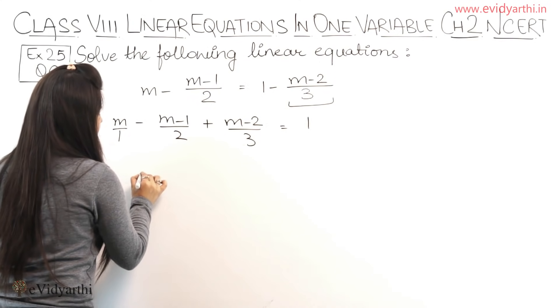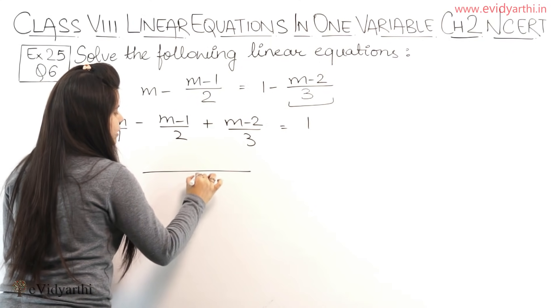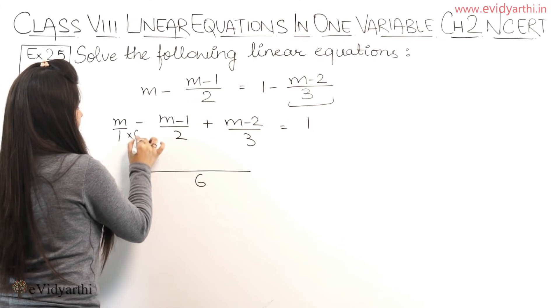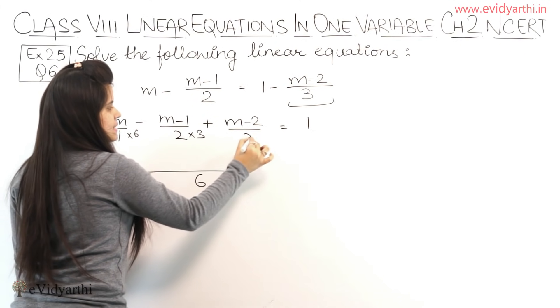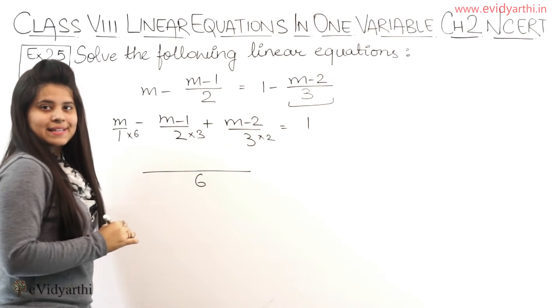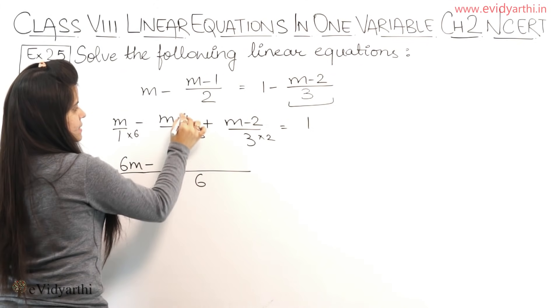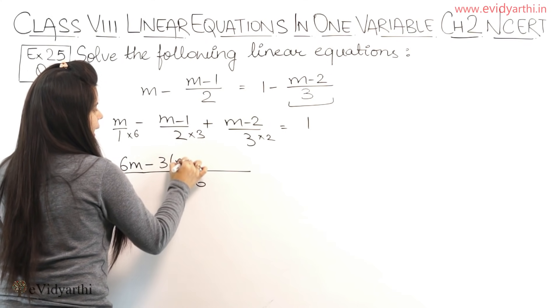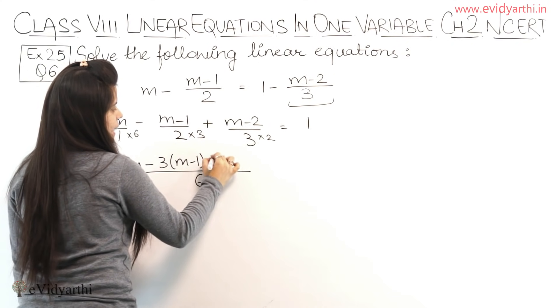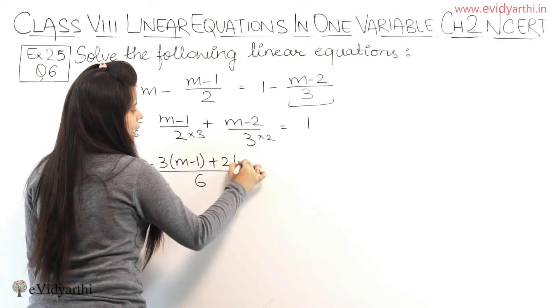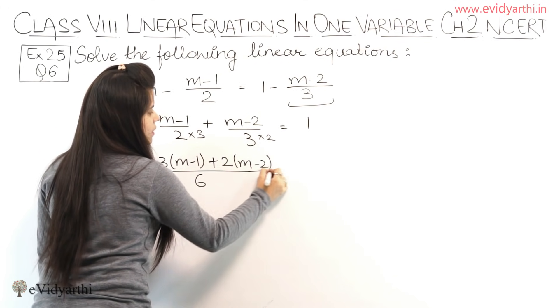Now we need to take the LCM. The LCM of 2 and 3 will be 6. This will be multiplied by 6, 2 threes are 6 and 3 twos are 6, right? So multiplying we get 6M minus 3(M-1) plus 2(M-2).